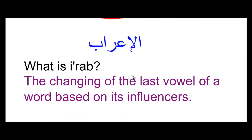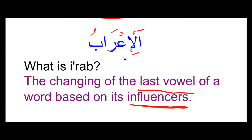In Arabic it's called al-i'raab, and that is the subject for today's video. I'raab is the changing of the last vowel of a word based on its influencers. I'raab is the most important thing in nahu. You might be wondering why we're learning it now after 9 lessons — the reason is I wanted to have a lot of examples to use so it could be easier to understand, because at i-arabic we don't just concentrate on grammar but try to make sure everything is understood and applied.